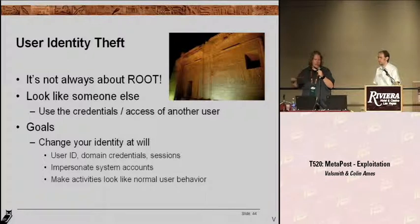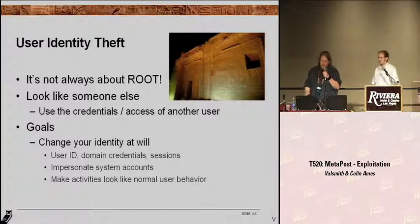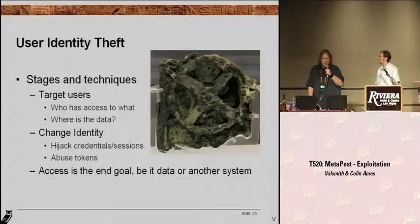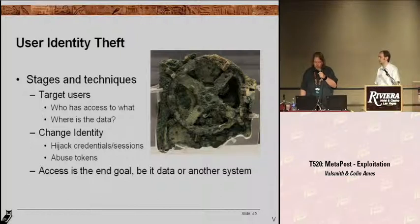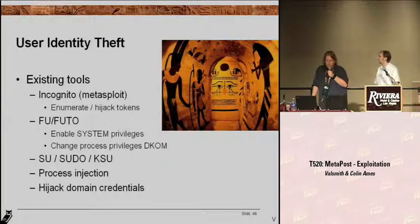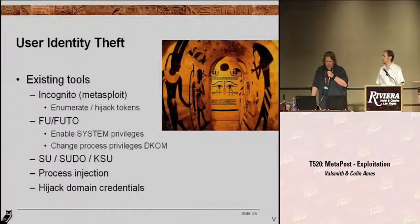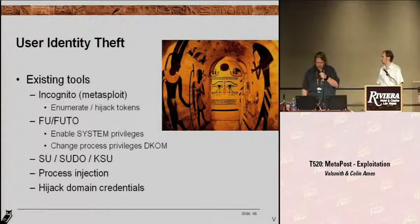If they see 'account hacked' going across the network doing lots of weird stuff, it's pretty obvious. But if they see Joe DBA accessing the database, that's what he does every day. So the stages of this are: first, target the users — gather intelligence about who has access to what data. If you see Joe DBA, he's likely going to be the database guy. You want to change your identity by hijacking credentials. Access is the end goal, not root. There's actually some pretty cool tools to do this — a tool called Incognito, which has actually been built into Metasploit now, is very useful as you hijack tokens. The FU rootkit from rootkit.com is very cool and you can extend it to do some interesting things. And some more traditional things like process injection.